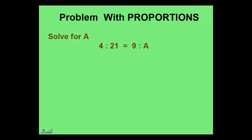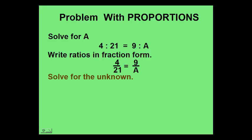Now let's go through all of our steps. Start by writing the ratios in fraction form. 4 over 21 equals 9 over A. We need to solve for A. We'll start by getting a common denominator for both fractions. Our common denominator would be 21A.